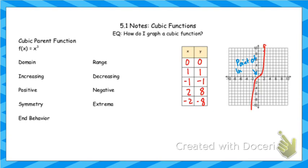That point where it's bending has a special name — it's called the point of inflection. The point of inflection is where your graph changes concavity. Like parabolas: when they opened up, they were concave up; when they opened down, they were concave down. This graph has a curve where it's bending up, but once it reaches this point, it's bending down. That's the point of inflection.